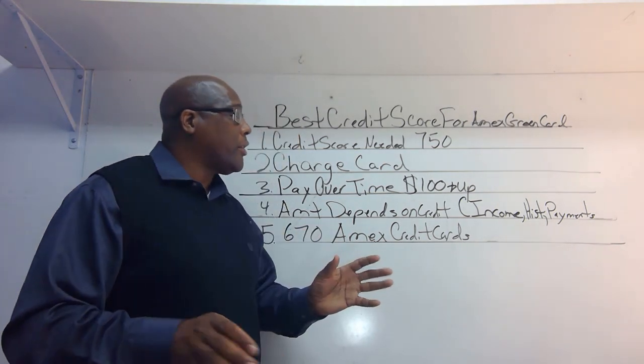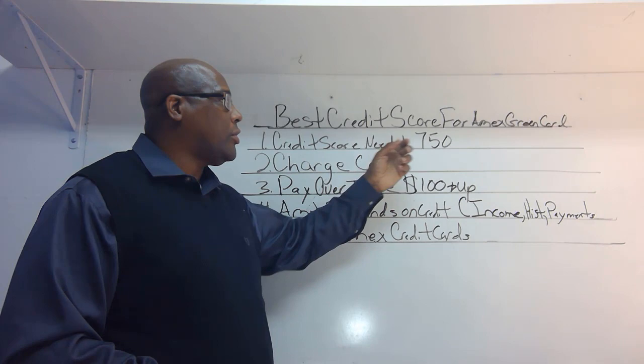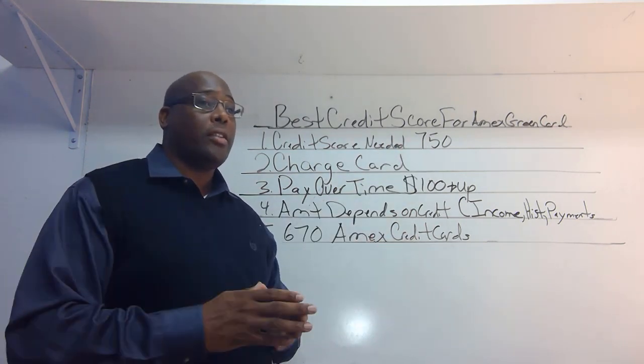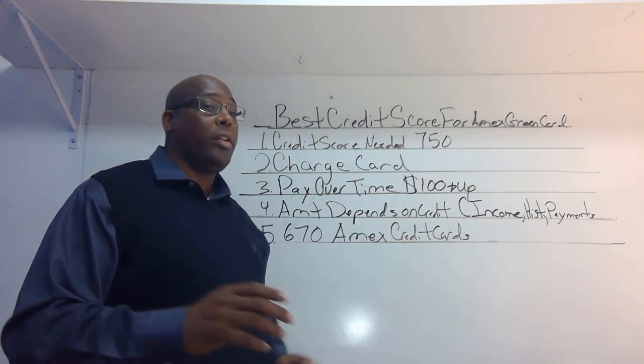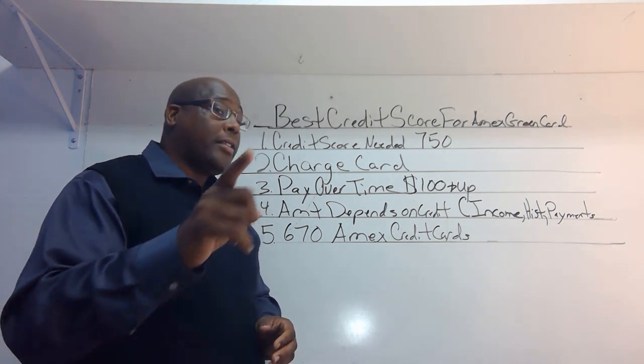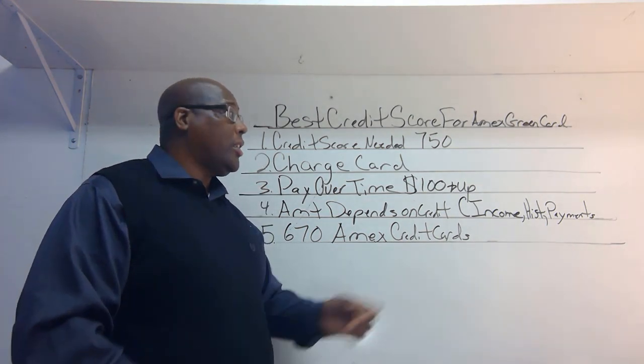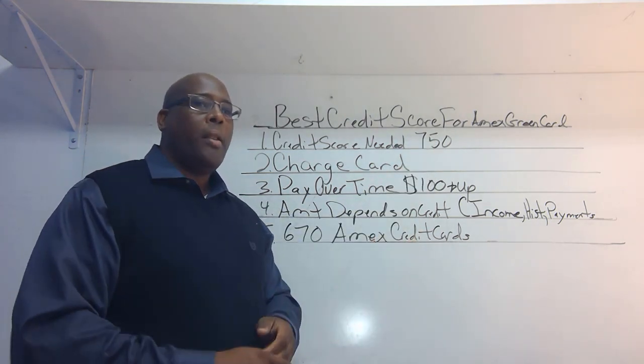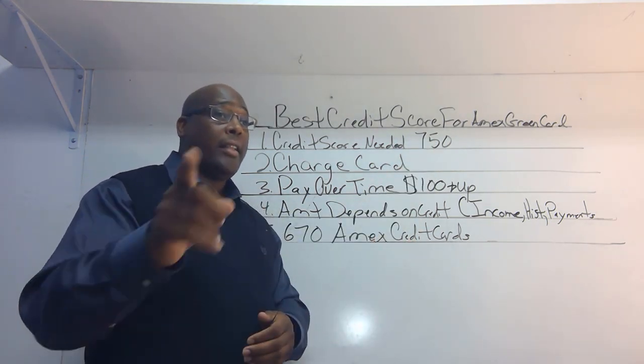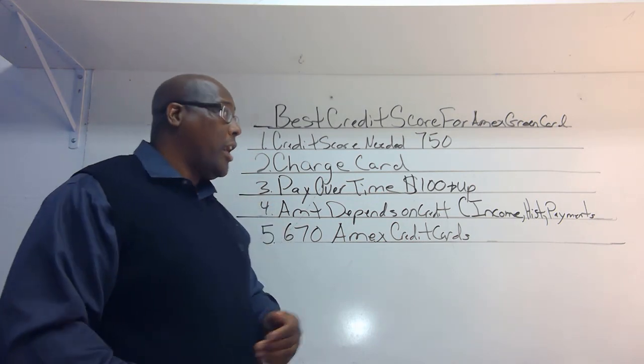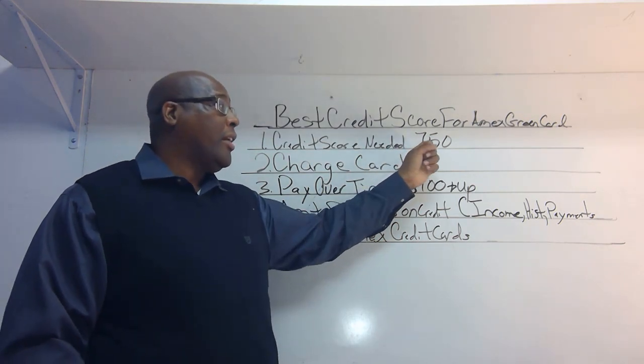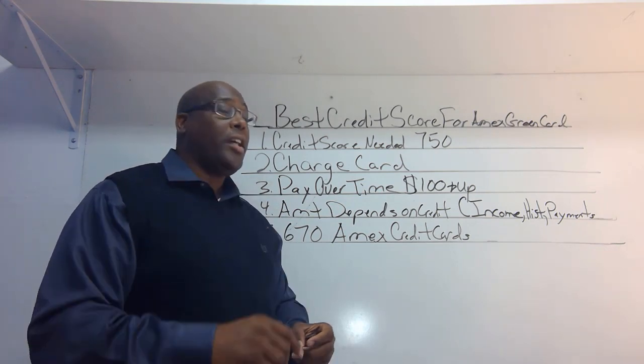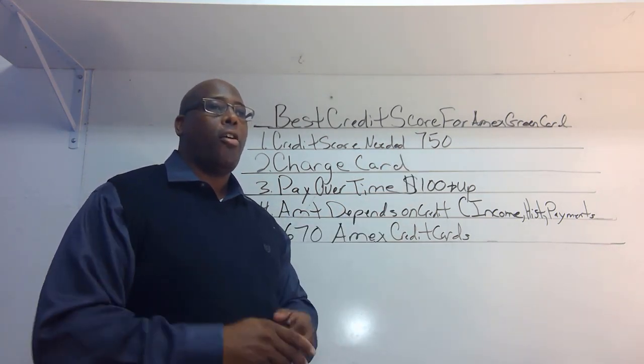Now the average credit score, they're stating that you should have at least a 750 credit score to get the American Express green card. However, that's not the case. They're saying that you should have that 750 excellent credit score, but American Express is not saying that. The reason is there are people that have a 720 credit score that's still getting the American Express green card.